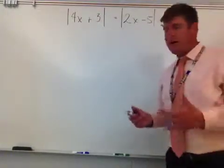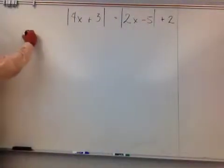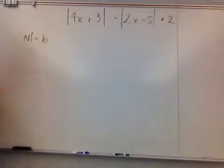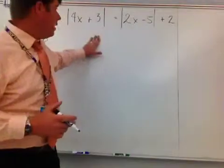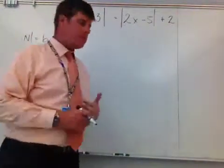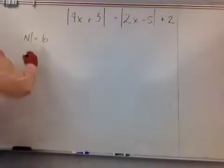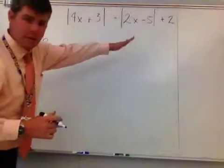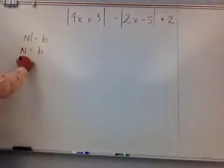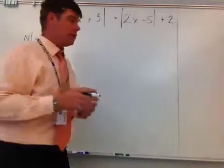We follow the idea that the absolute value of some expression being equivalent to another expression means that expression n equals b, or n equals the opposite of b. You can't get held up on the fact that I have an absolute value of two absolute values. The way I'm going to start this problem is: n equals whatever the expression is, and then n equals the opposite of whatever that expression is.